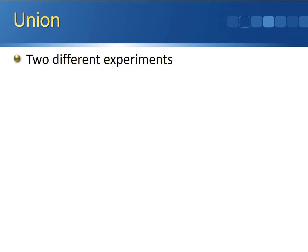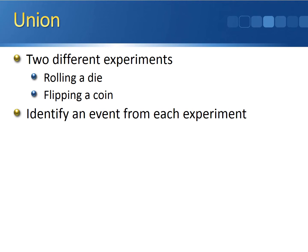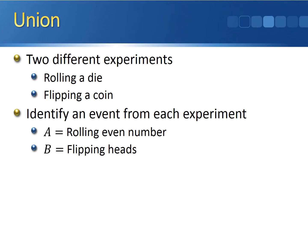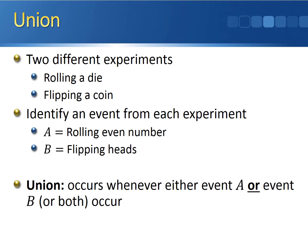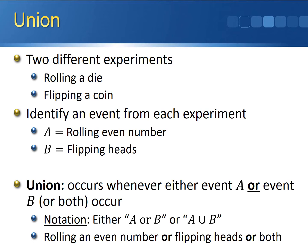Before we can go any further, we first have to define what the union is. Let's say we're running two different experiments — we'll use the same example as last class: rolling a die and flipping a coin. We can identify an event from each experiment. Event A is rolling an even number, and event B is flipping heads. The union of two events is the event that occurs whenever either event A or event B, or both A and B occur. The union is denoted by writing 'A or B' in words, or A followed by the union symbol (which looks like a capital U) followed by B. So the union here would be rolling an even number, or flipping heads, or both. You just need at least one of the two events to occur for the union to occur.